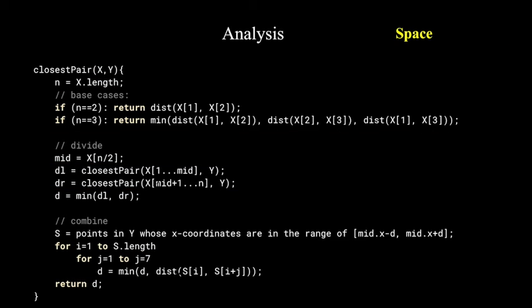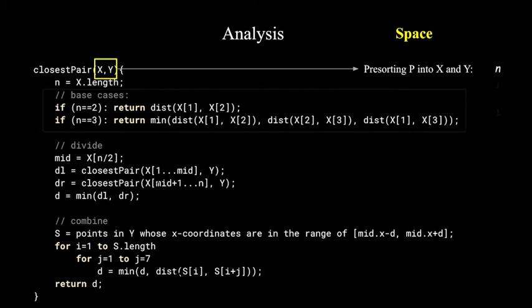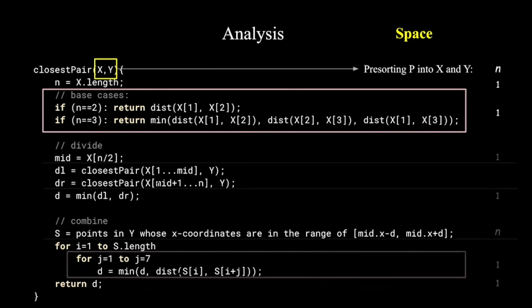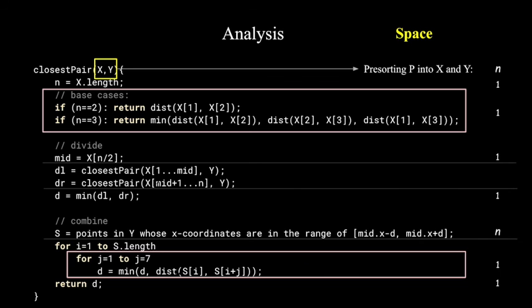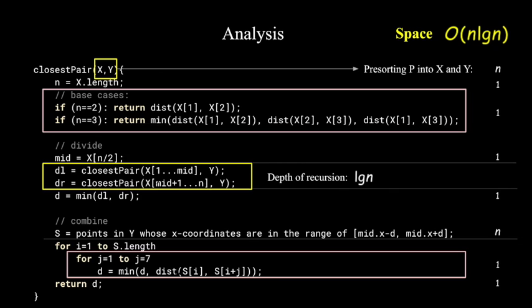For space complexity, the pre-sorted arrays takes up n extra resource. For each recursion, the simple operations just need constant extra space. Since we are creating a new array for the strip on each recursive call, and a strip can contain close to n points, this increases the space needed for each recursion to n. And since the depth of our recursion is log n, we have a total space complexity of n log n.